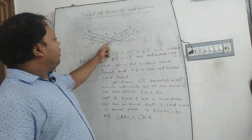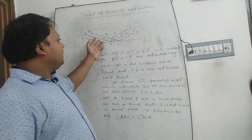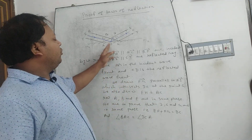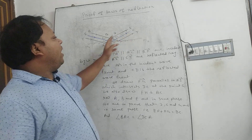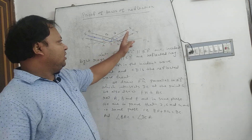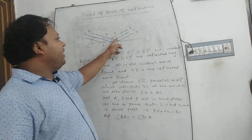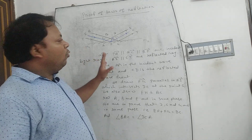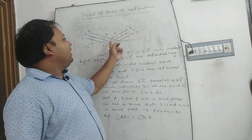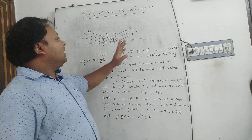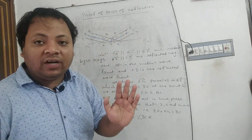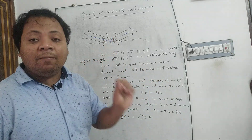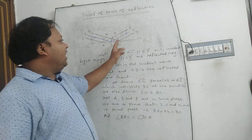We draw EF parallel to QC, so EF is also an incident light ray. We draw another line FU parallel to CT or AS, which intersects DC at the point G. Now we have to prove that AU is parallel to CT, that is, FU is a reflected light ray. That is, D, G, and C are in the same phase.